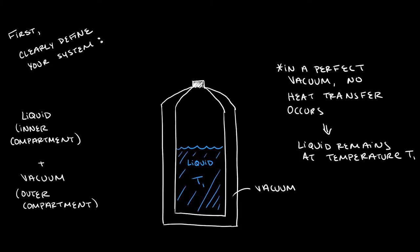When considering entropy in the second law of thermodynamics, having a clearly defined system is super important. Here, the system can be the liquid in the innermost compartment with a vacuum forming a second compartment around it.